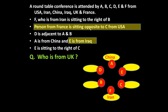Now let us revisit the underlined statements. The person from France is sitting opposite to C from USA — so C is from USA. The person sitting opposite to C is D, which means D is from France. Next, E is from Iraq — this is E, so E is from Iraq. Only one country is left: UK. Therefore B is from UK. So who is from UK? The answer is B — representative B is from UK.